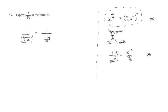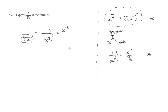Next, we have a power of x at the bottom of a fraction. It can leap up to the top and the power changes from positive to negative. So we're left with x to the power negative one third. And that is of the form x to the power n, where n is negative a third.